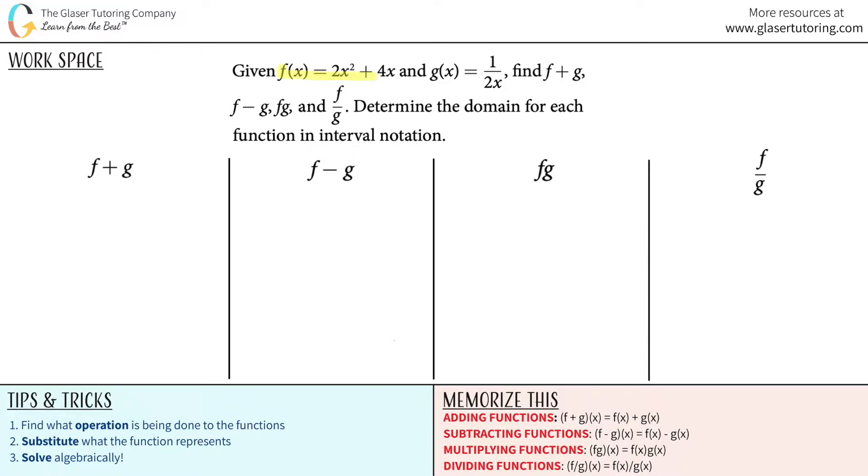Given f of x equals 2x squared plus 4x and g of x equals 1 over 2x, we have to find f plus g, f minus g, f times g, and f divided by g, and then we have to determine the domain for each function in interval notation.